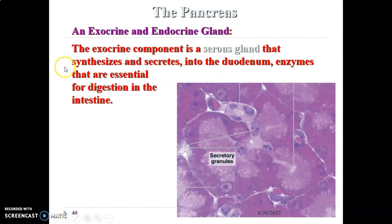The exocrine pancreas secretes enzymes, and enzymes are protein. So the cells of the exocrine pancreas have features of a protein synthesizing cell: a large prominent nucleus, prominent euchromatic nucleolus, abundant rough endoplasmic reticulum, abundant ribosomes and Golgi apparatus, as well as zymogenic cytoplasmic granules.